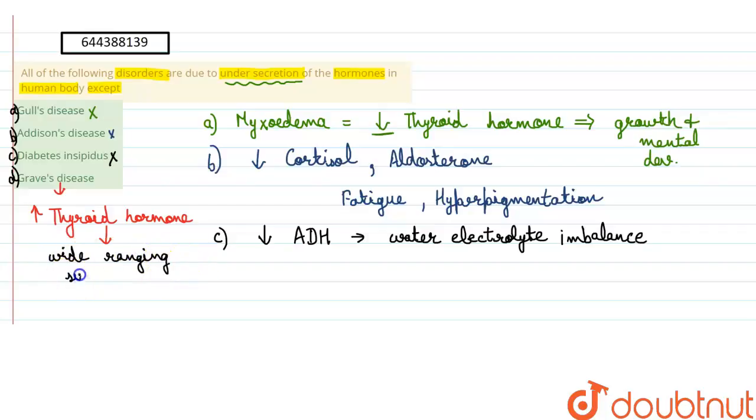So our answer to the question would be option D, that Graves' disease is caused by increase in the thyroid hormone, whereas all the other diseases which are given here are caused by the under secretion or less secretion of the hormone.